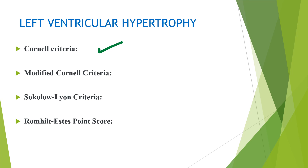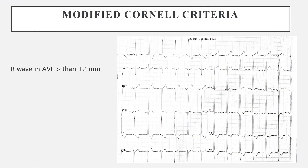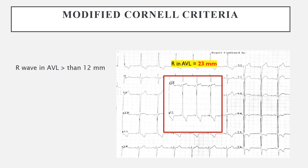Let's move on to the modified Cornell criteria. This is a simpler criteria because we just have to look at one thing: the R wave in AVL. If the R wave in AVL is more than 12 mm, this criteria fulfills the features for left ventricular hypertrophy. Applying this to our ECG, the R wave in AVL was 23 mm, which again fulfills the required value for the modified Cornell criteria, meeting the threshold for LVH.